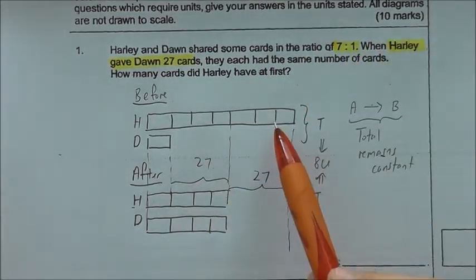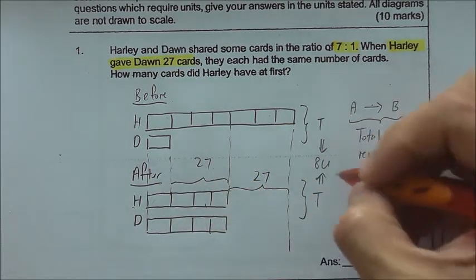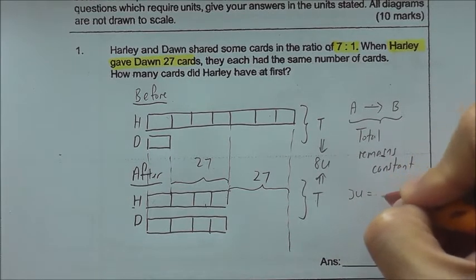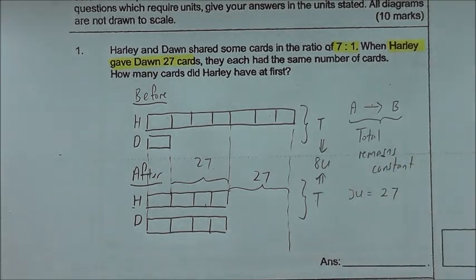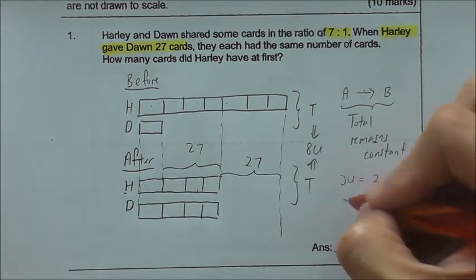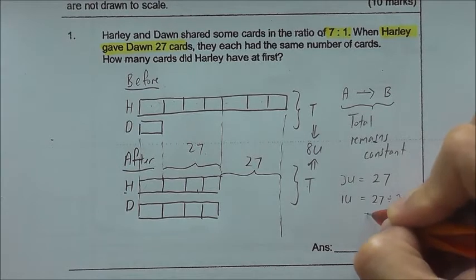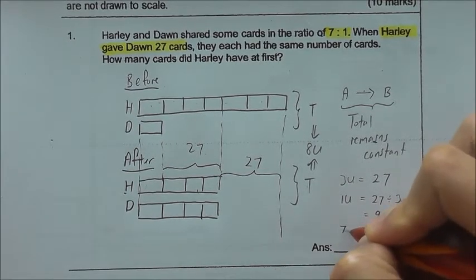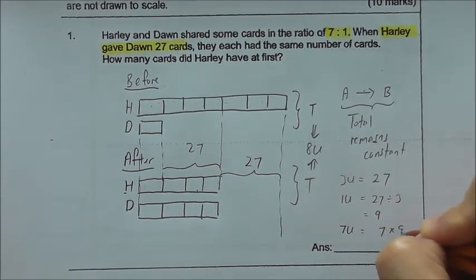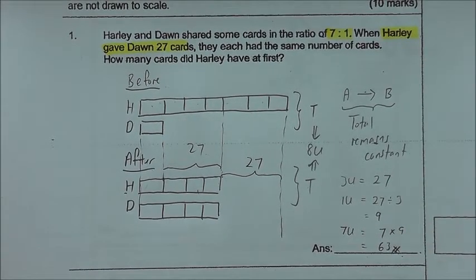Harley lost 3 units, Dawn gained 3 units, and 3 units is 27. So how many cards did Harley have at first? Harley would have 7 units. So what we do is we find 1 unit. 1 unit will be 27 divided by 3, which is 9. So 7 units, I will get 7 times 9, I get 63. So that's the answer.